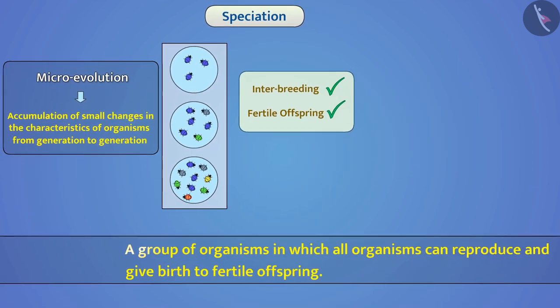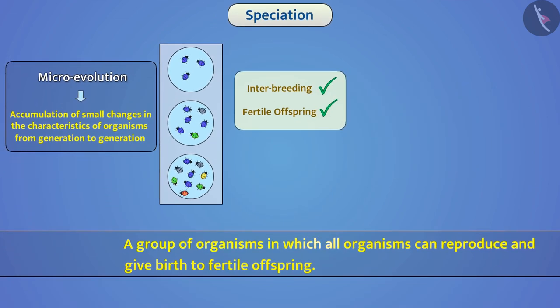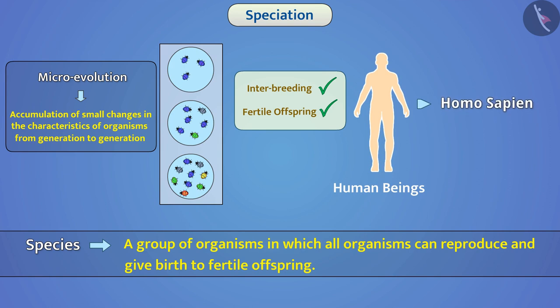A group of organisms in which all organisms can reproduce and give birth to fertile offspring is called a species. Human beings are a species known as Homo sapien. You can gather data about some of the species and write their scientific names.